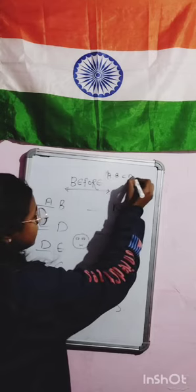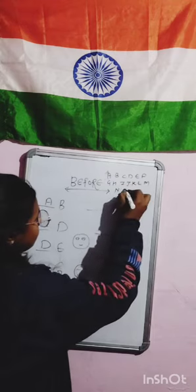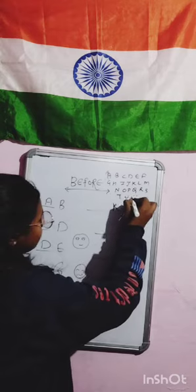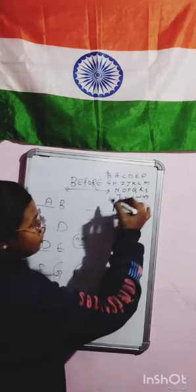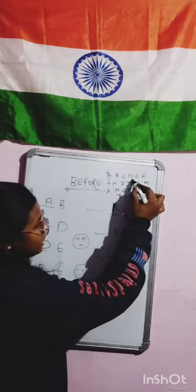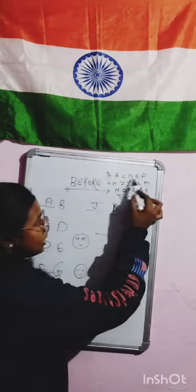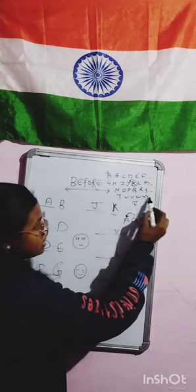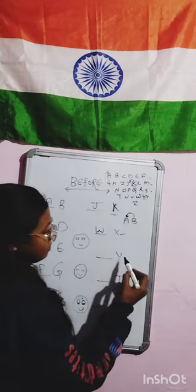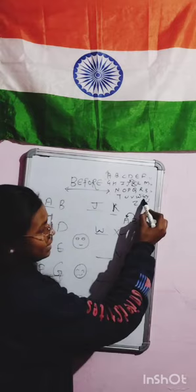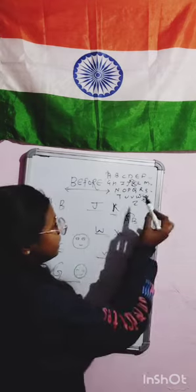A-B-C-D-E-F-G-H-I-J-K-L-M-N-O-P-Q-R-S-T-U-V-W-X-Y-Z. X for X-mas. How do you write T for Tiger?